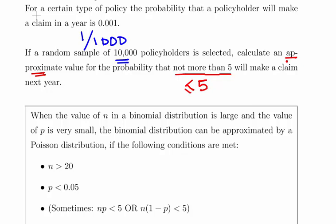Not more than five means less than or equal to five. In the first instance, we would use the binomial distribution to answer this, and the reason is we have a clearly identified value for p which is 1/1000 or 0.001, and then we have n equals 10,000 policyholders.